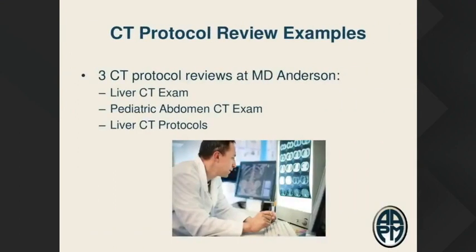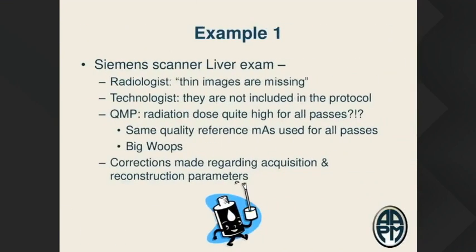Here are a few examples of CT protocol reviews performed at MD Anderson. Example one: a Siemens scanner liver exam. The radiologist was concerned because expected thin images were missing from the exams. The technologist responded that they weren't included in the protocol on the scanner. The physicist noted the radiation dose seemed pretty high for all the multiple passes, having wound up using the same quality mAs for all passes — considered a big error. Corrections were made to both acquisition and reconstruction parameters all at once on this liver exam, illustrating how the team can work together effectively.